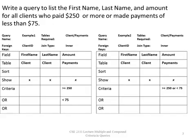For example, let's say I want to write a query to list the first name, last name, and amount for all clients who paid $250 or more or made payments of less than $75. On this screen I have two QBE grids — two examples for you. The first example on the left-hand side shows the criteria of greater than or equal to $250 under the amount field, or less than $75 under the amount field. Because the criteria are on separate rows, that means an OR scenario.